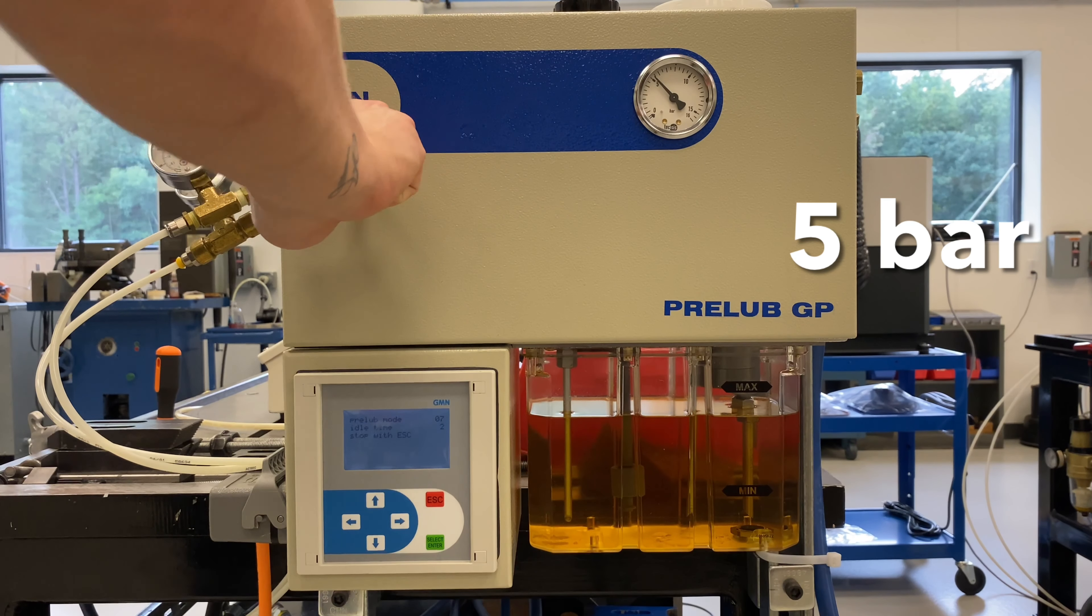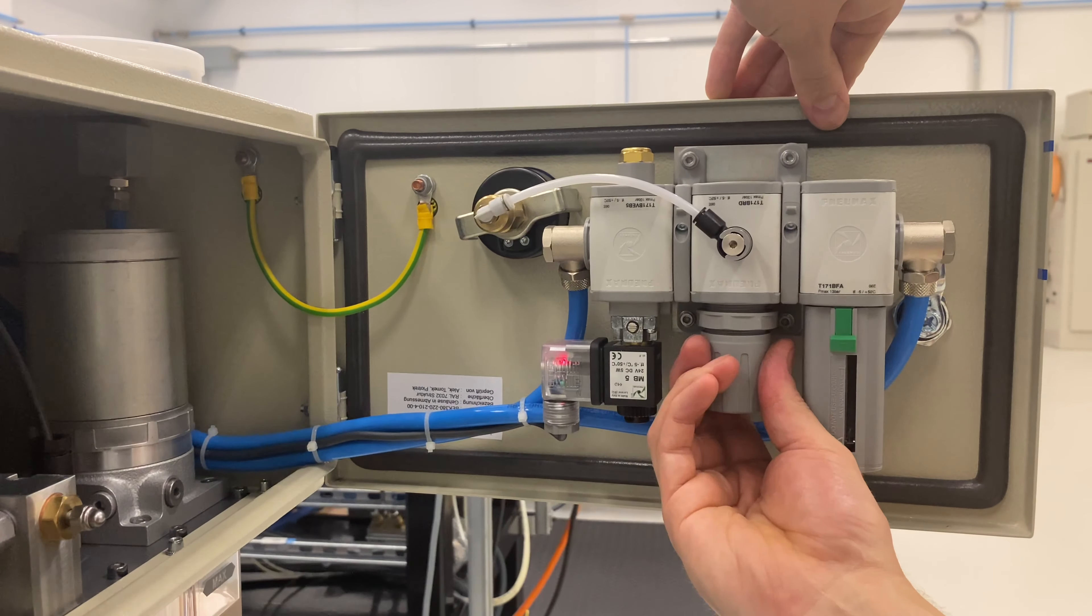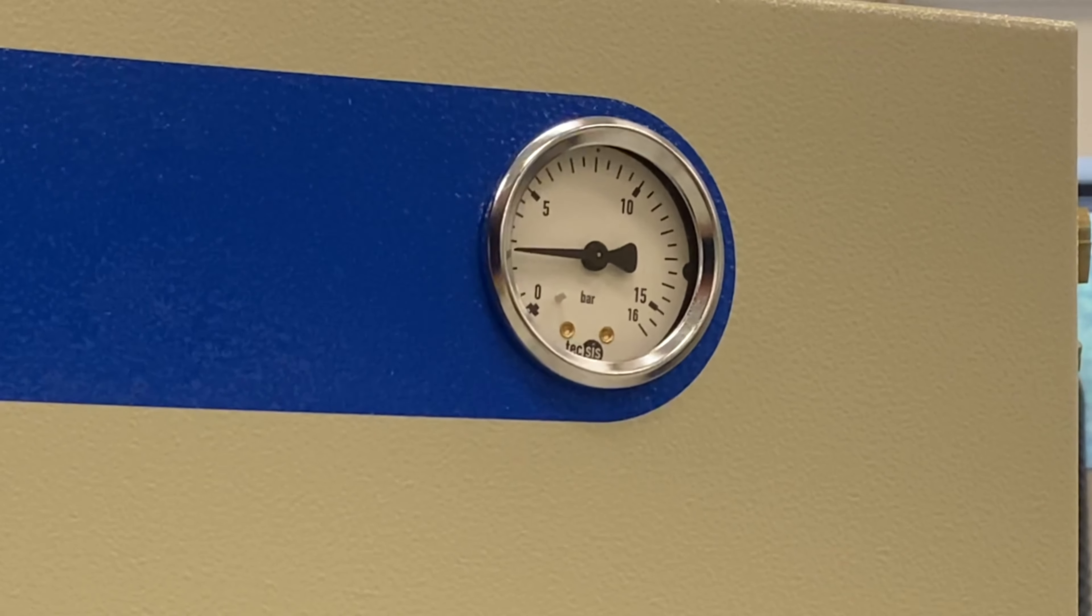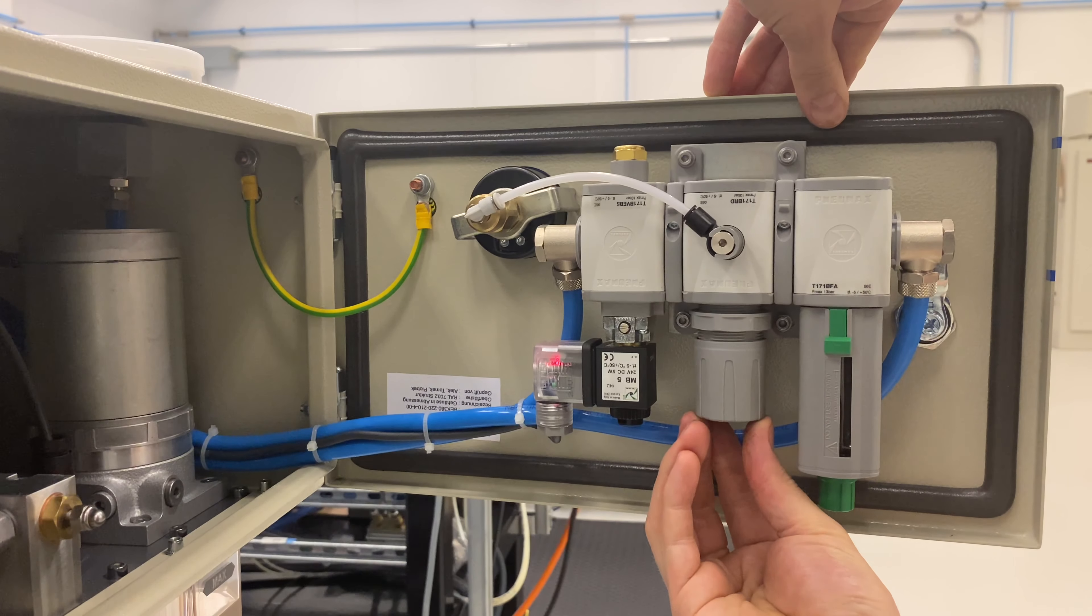Hook up a minimum of 5 bar of clean dry air to the lubricator. There is a built-in pressure gauge on the front and a regulator inside the case so you can adjust the incoming pressure accordingly.